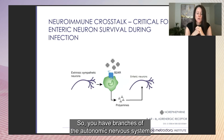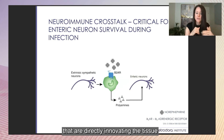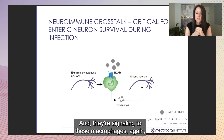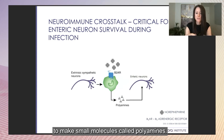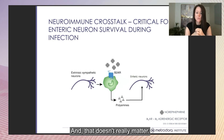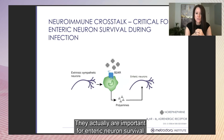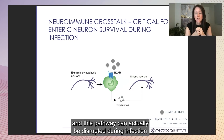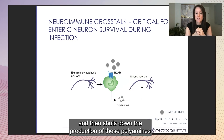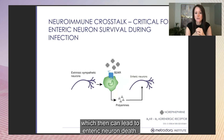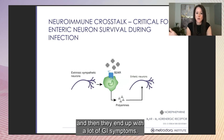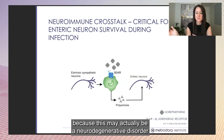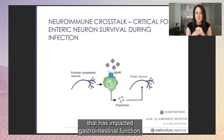Here's another example. Branches of the autonomic nervous system directly innervate GI tract tissue and signal to macrophages through norepinephrine. The norepinephrine signals the macrophage to make small molecules called polyamines, which are important for enteric neuron survival. This pathway can be disrupted during infection, shutting down norepinephrine production, then polyamine production, which can lead to enteric neuron death. Many individuals know they had an infection and then ended up with a lot of GI symptoms — this may actually be a neurodegenerative disorder impacting gastrointestinal function.